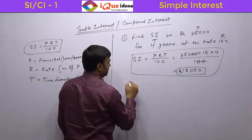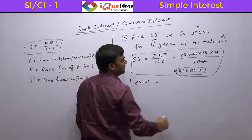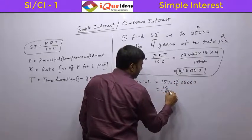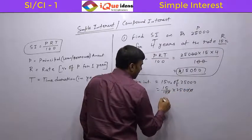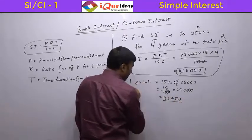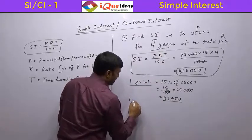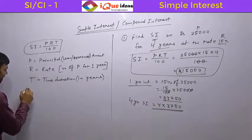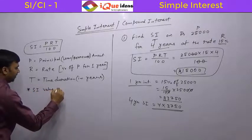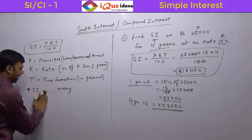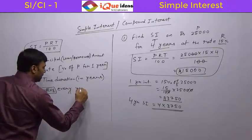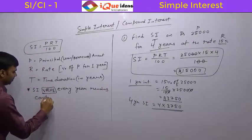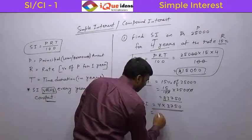There is another way to look at it. One year interest equals 15 percent of 25,000, which is 15/100 × 25,000 = 3,750 rupees. This is the one year interest. Since simple interest value every year remains constant, 4 year simple interest will be 4 × 3,750 = 15,000 rupees. This is one very important point about simple interest — every year the value stays the same.